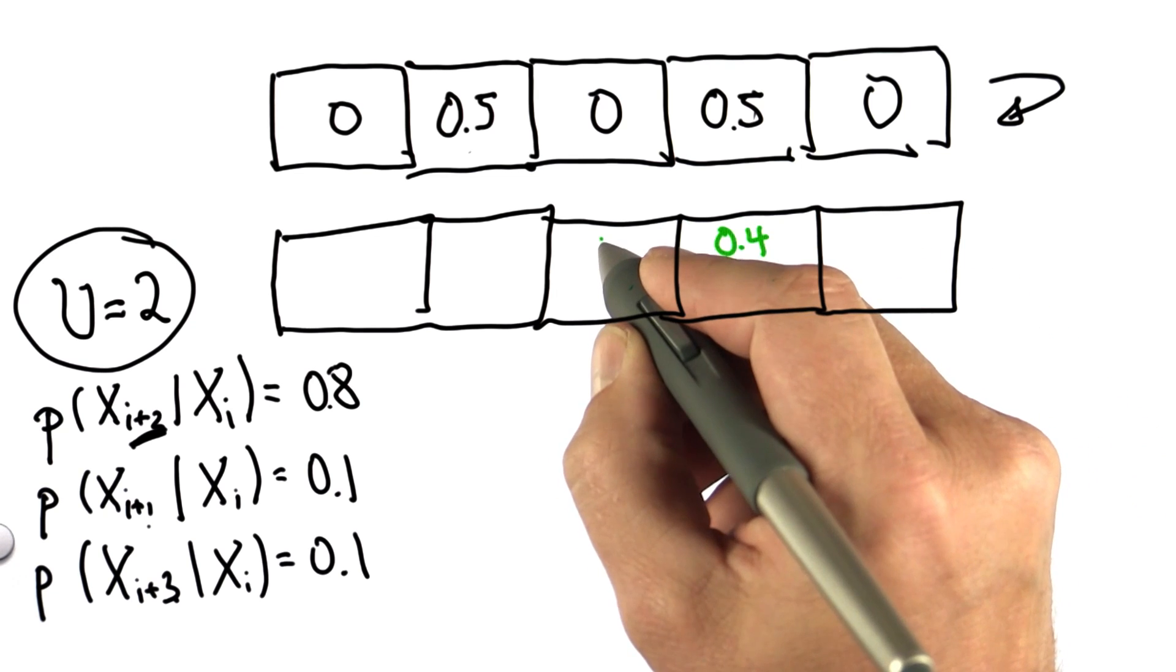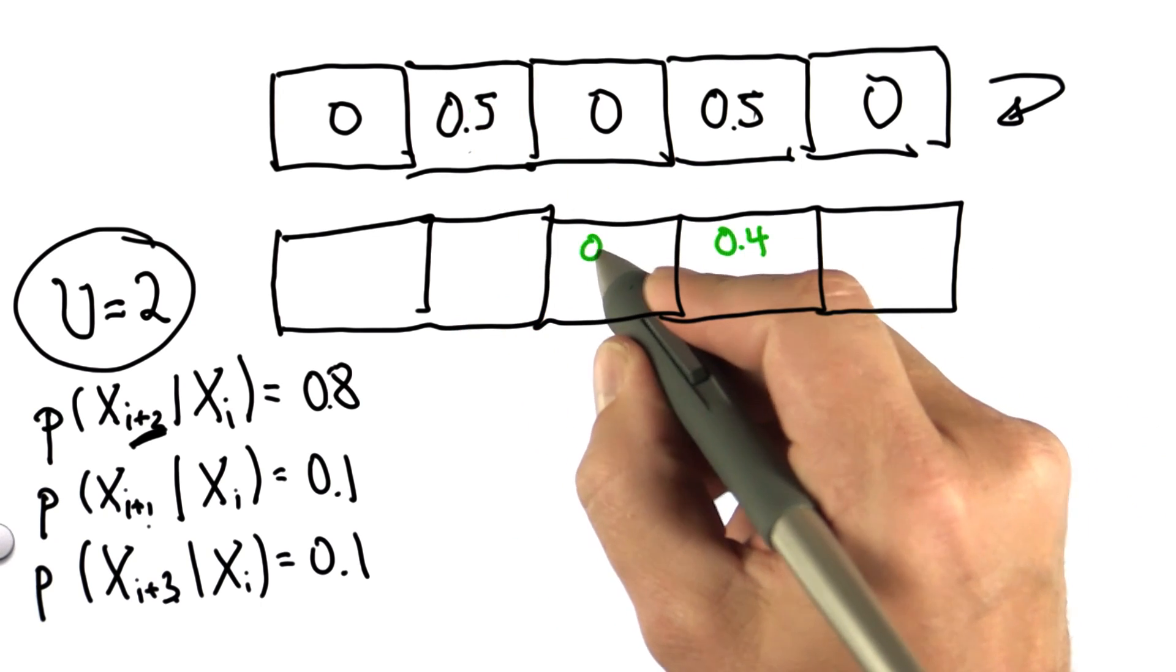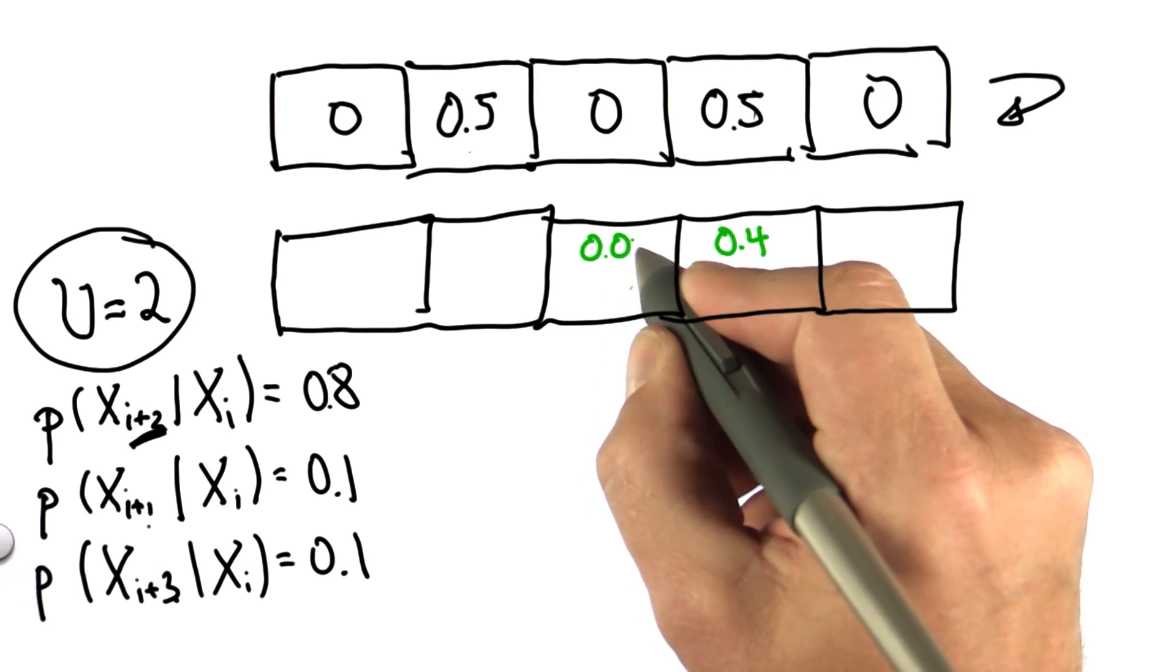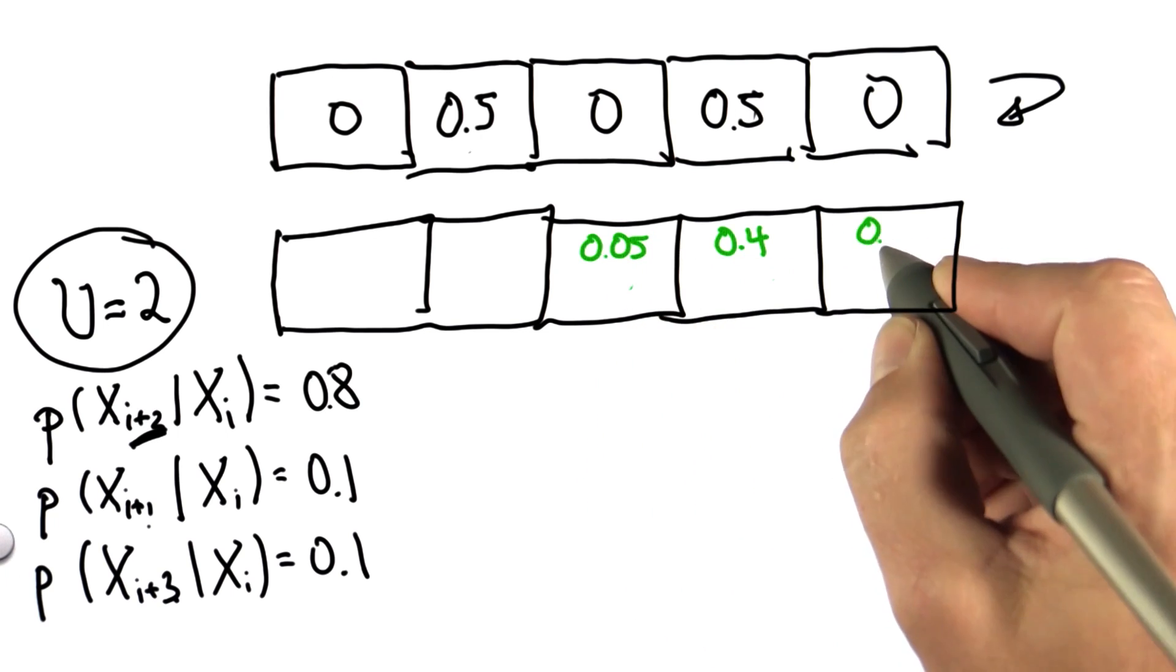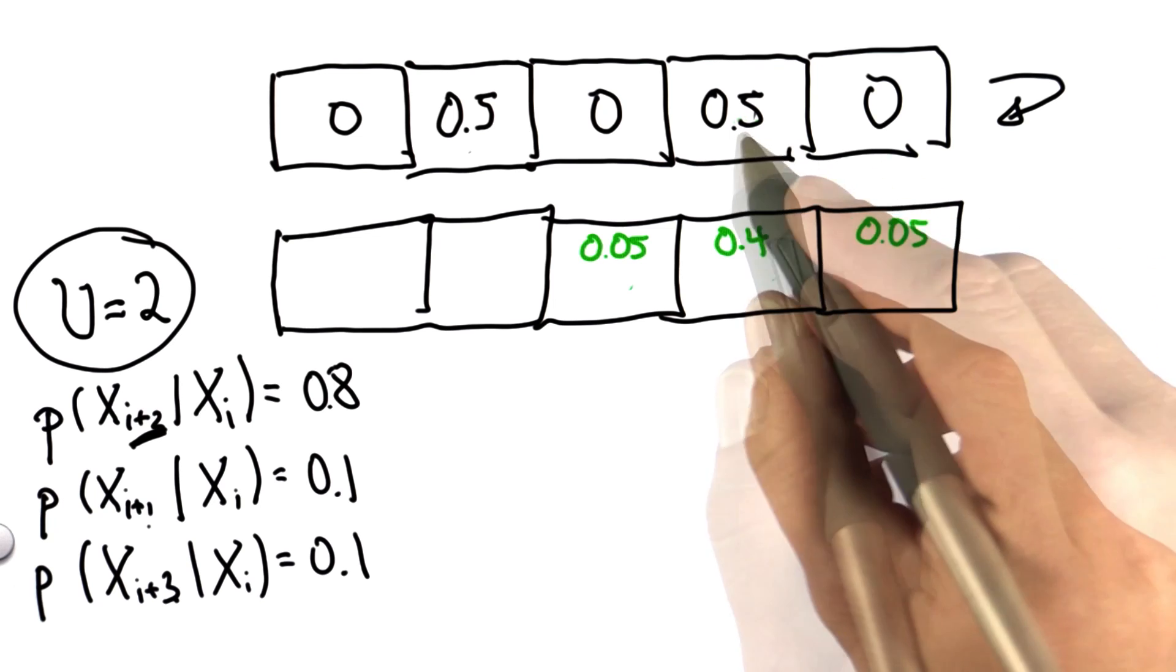And 0.1 of this, which is 0.05, ends up over here. And the reason why I write it so small is because this is not the correct answer quite yet.